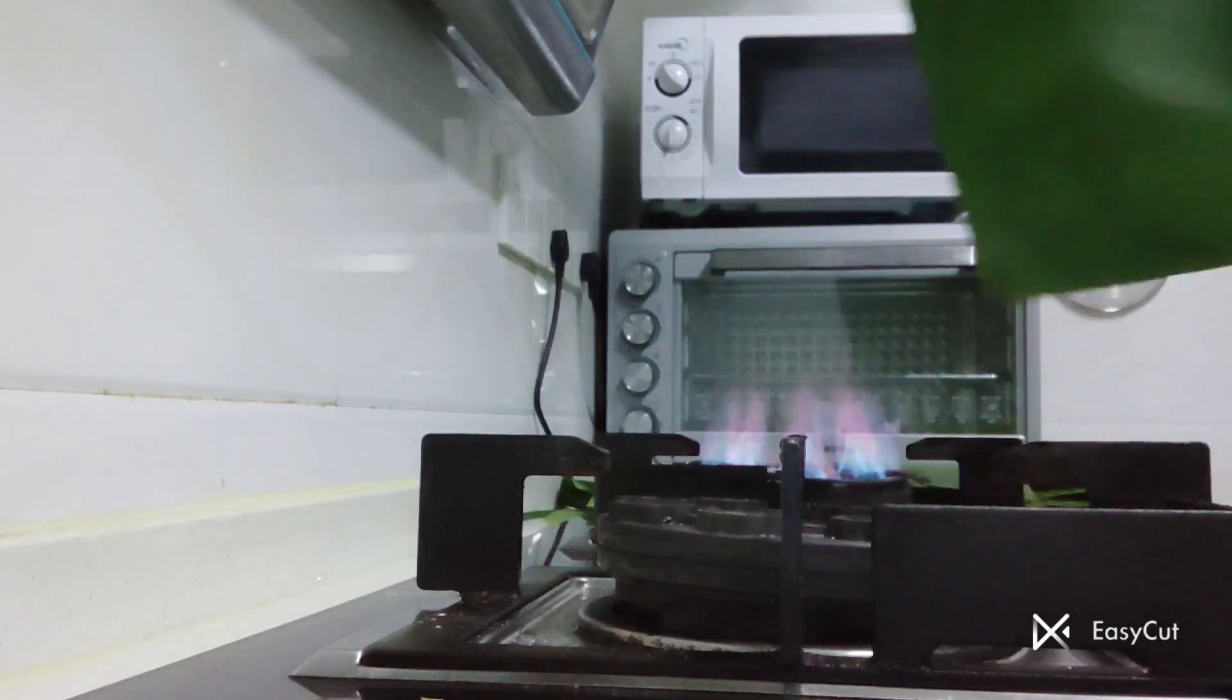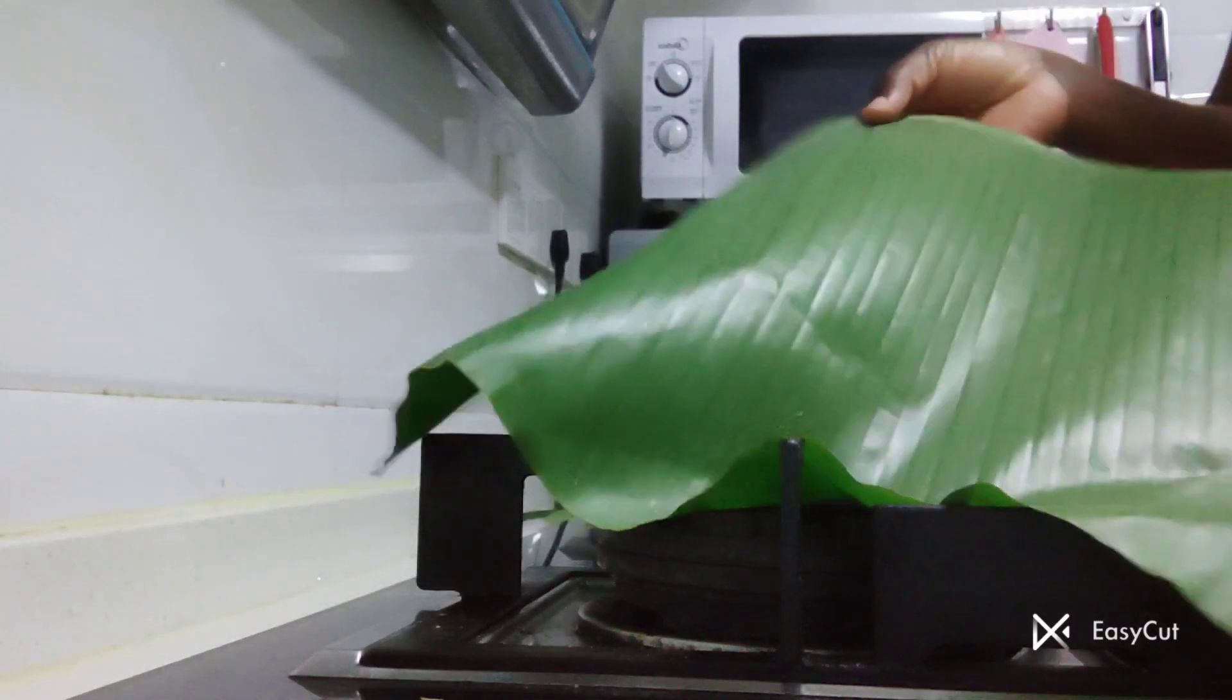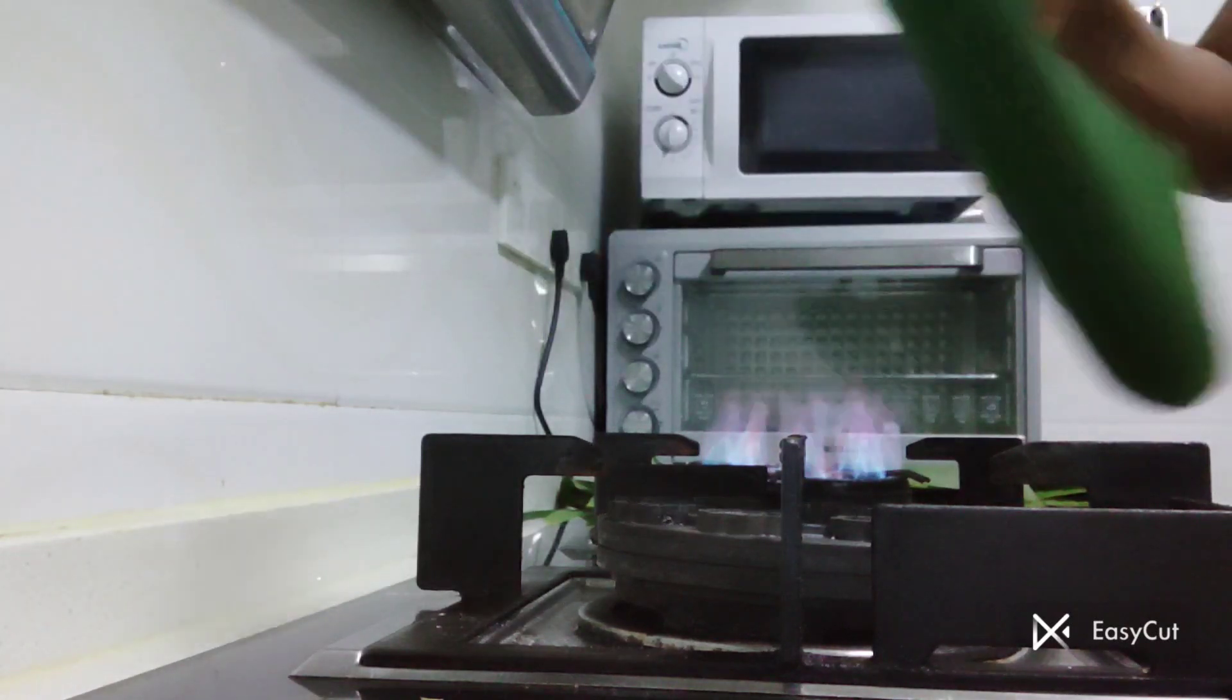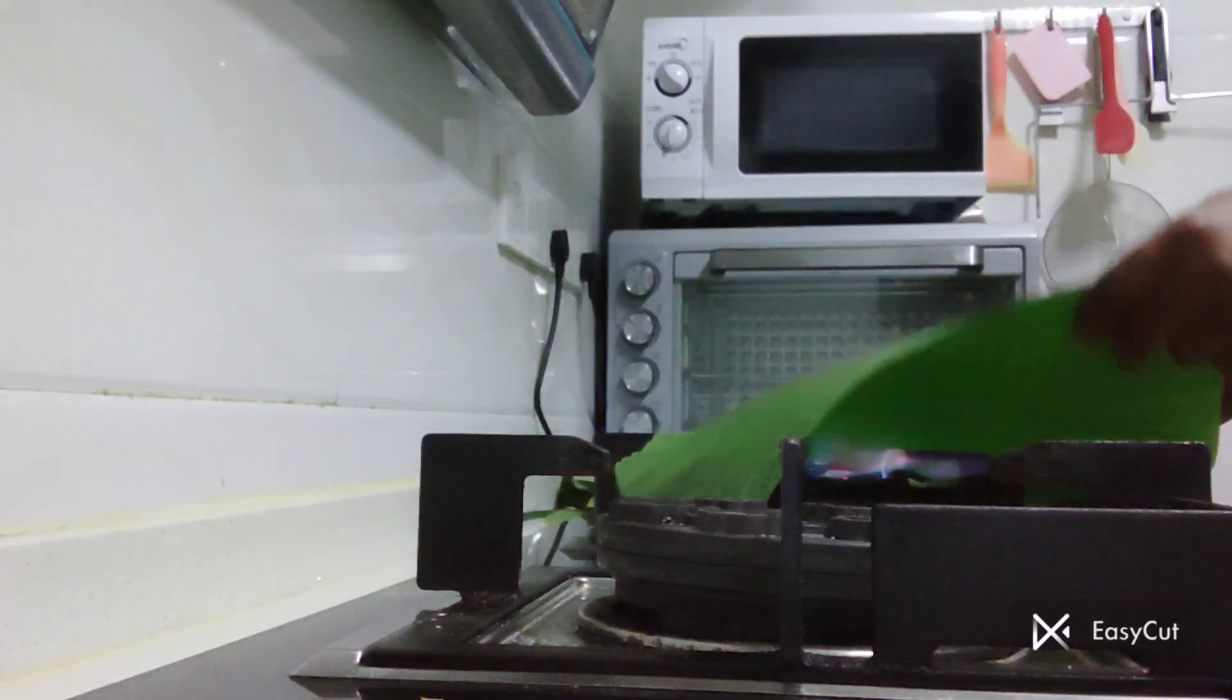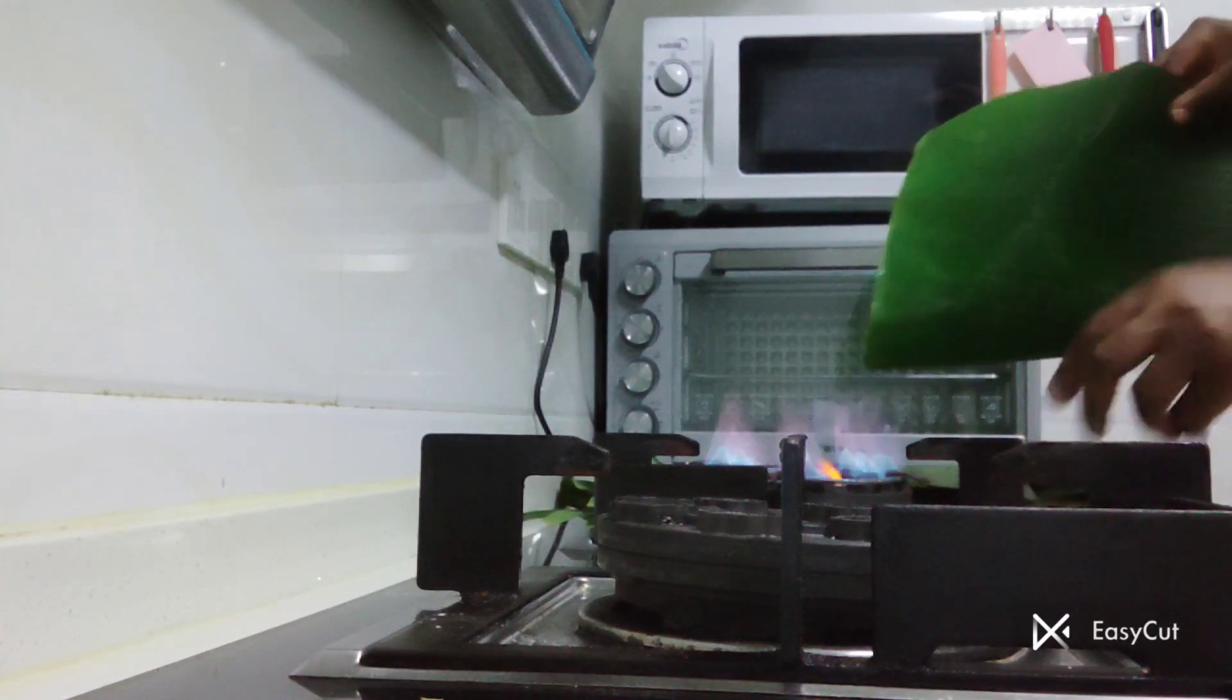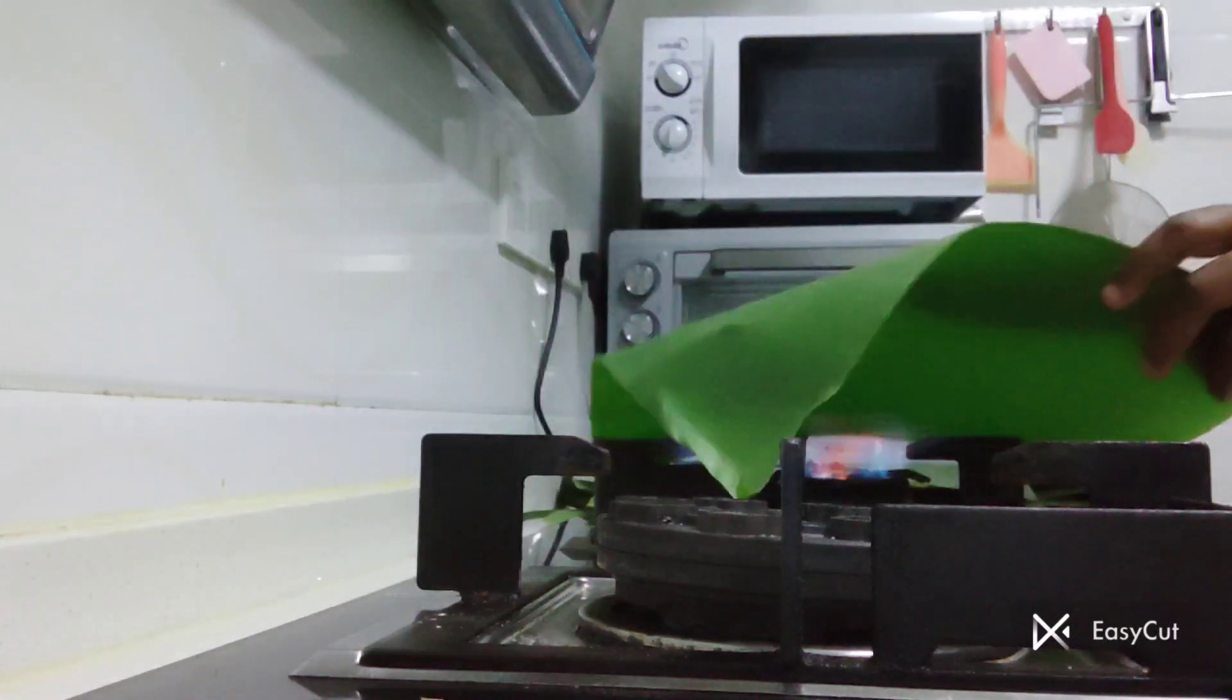This is the front part of the leaf, and this is the back part. You start warming using the front part. Make sure your flame is not very strong, otherwise the leaves are going to get burnt.